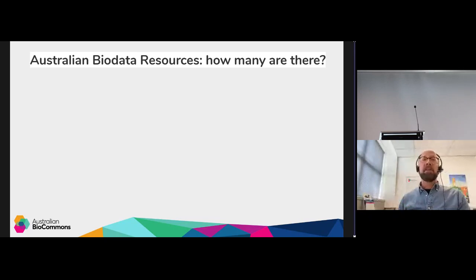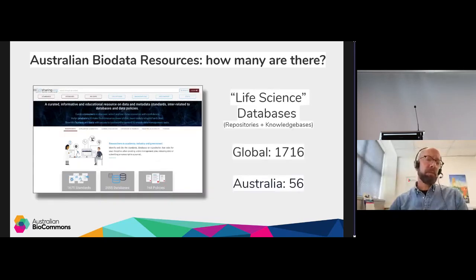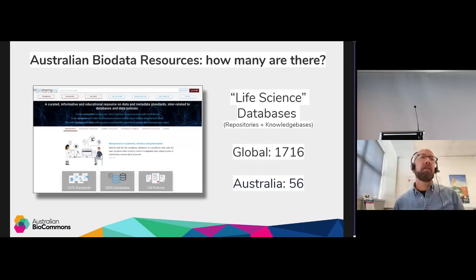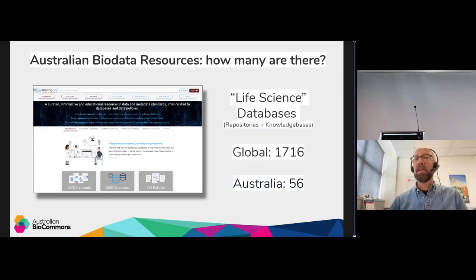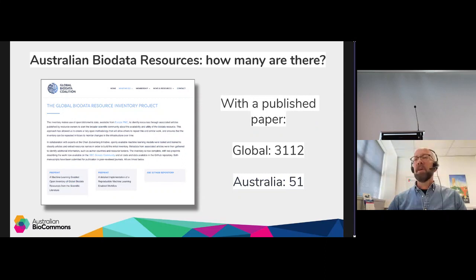Thinking about Australia in the world: how many biodata resources might there be out there? One way to find out is to look at global registries. FAIRsharing — which started life as BioSharing — is a registry of databases around the world. Searching this for life science, incorporating both repositories and knowledge bases, shows well over 1,500 life science databases registered globally, with 56 based in Australia.